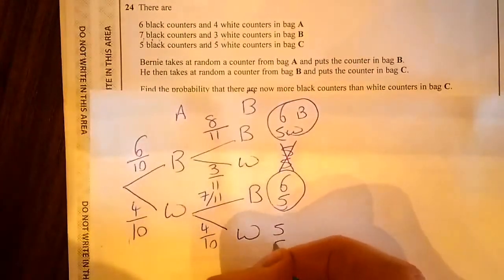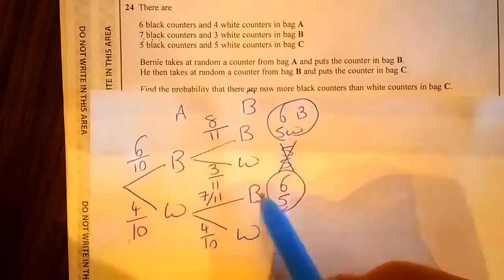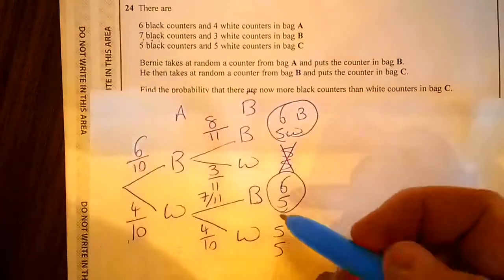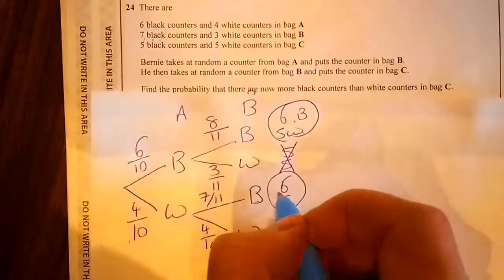That one there is going to be 5 black counters and 5 white. And I've worked this out because here you've added 1 on, there you've added 1 on. So I only really care about this one here and that one there.